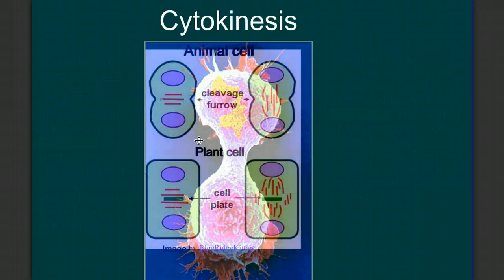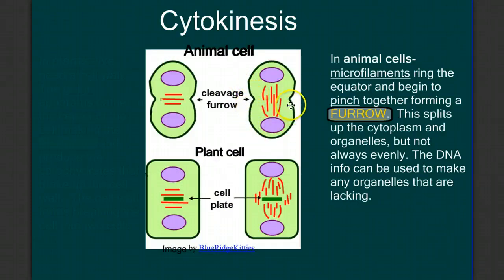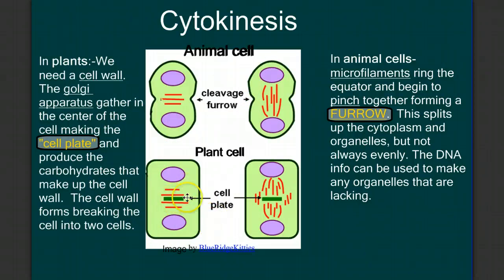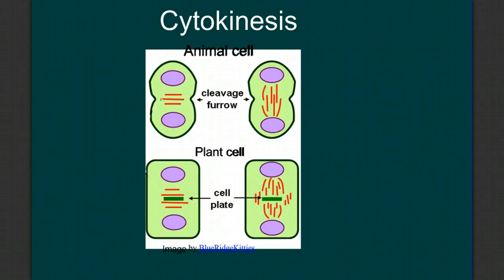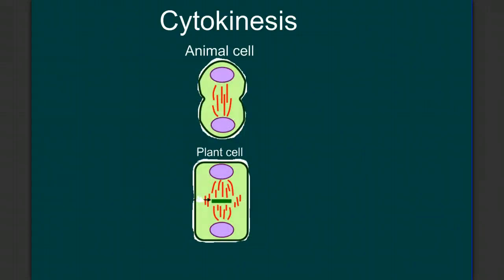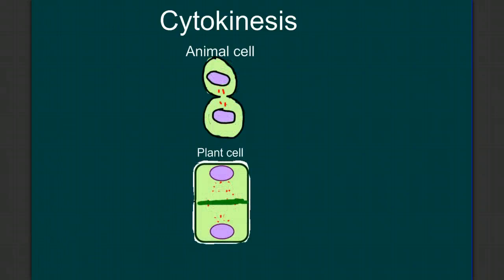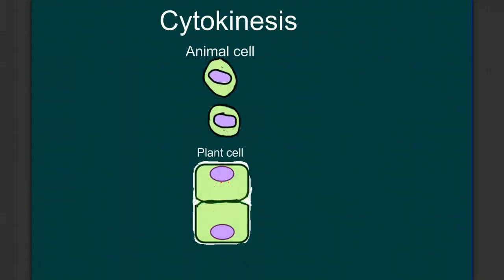Cytokinesis will be different in plant cells and animal cells. In animal cells, we form a cleavage furrow — an indentation as the cell takes on a peanut shape. Imagine putting a belt around the middle of a balloon and tightening it, squeezing it tighter and tighter, pinching the sides in — that indentation is called a cleavage furrow. But since plant cells have a rigid cell wall, we have to build a cell wall from the middle out. This section is called the cell plate. We can see the cleavage furrow indenting further and further, and the cell plate extending from the middle out until it breaks the cell into two, finishing cytokinesis.